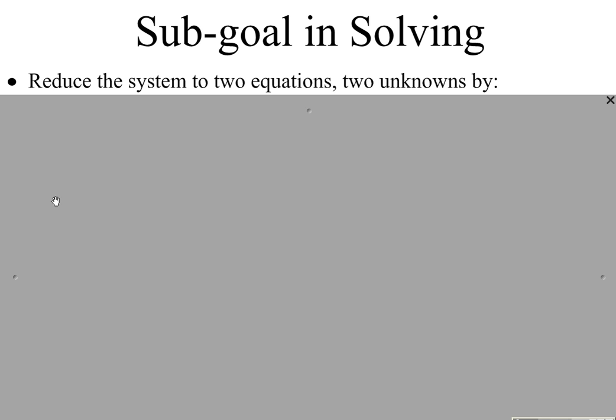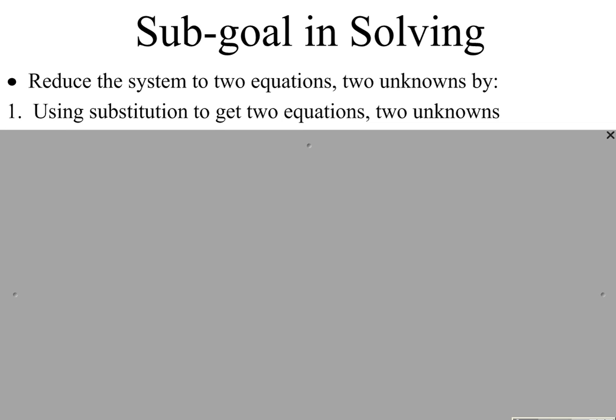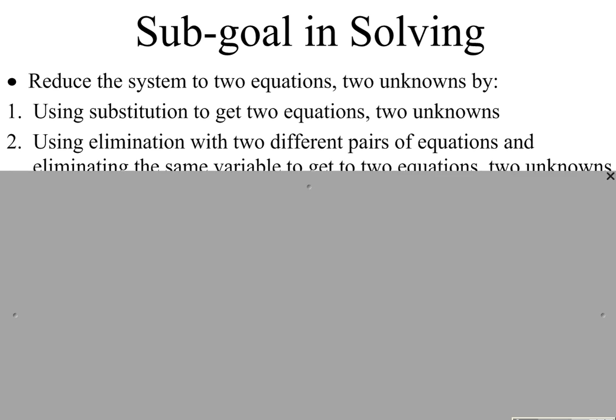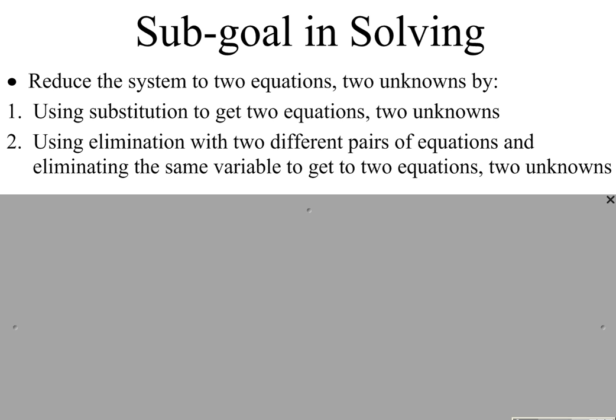There are two ways that we can go about doing this. One way is through substitution — we would solve an equation for one of the three variables, then substitute that into both of the other two equations to reduce it to two equations, two unknowns. A second way, and usually more common, is using elimination with two different pairs of equations and eliminating the same variable to get two equations, two unknowns.